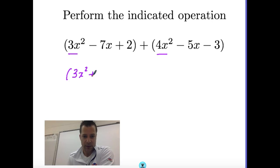But I'm going to have 3x squared plus 4x squared. I'm going to close that, I'm going to say plus, and then I'm going to look to see other terms that I have in common. Now notice here I have an x term, and I have an x term here. I'm going to do plus, and that's negative 7x plus negative 5x.